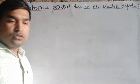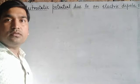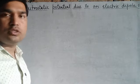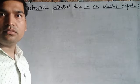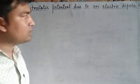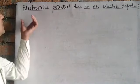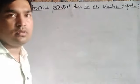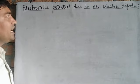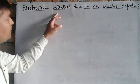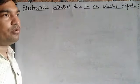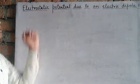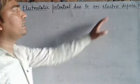Students must solve the above question in their notebooks. The question is also provided in the Google Classroom. Now we have to discuss electrostatic potential due to an electric dipole. In the previous chapter we calculated the electric field due to an electric dipole, and in this chapter we calculate the electrostatic potential due to an electric dipole.